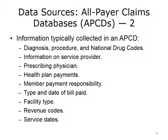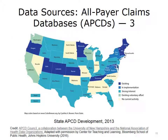According to the APCD Council, information typically collected in an APCD includes diagnosis, procedure, and medications, information on service provider, prescribing physician, health plan payments, member payment responsibility, type and date of bill paid, facility type, revenue codes, and service dates. This map shows the coverage of statewide All-Payer Claims Databases. As shown, a considerable number of states have existing APCDs or are in the process of implementing one.